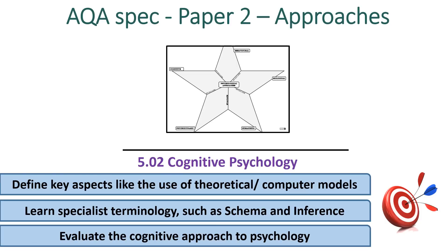Hello and welcome to this episode of PsychBoost. In this video we're going to be looking at cognitive psychology as an approach. We'll define key aspects of cognitive psychology such as its use of theoretical computer models. We'll learn some new specialist terminology, such as schema and inference, and learn definitions of them. And we'll also look at ways we can evaluate the cognitive approach to psychology.